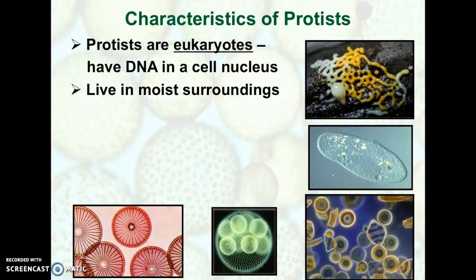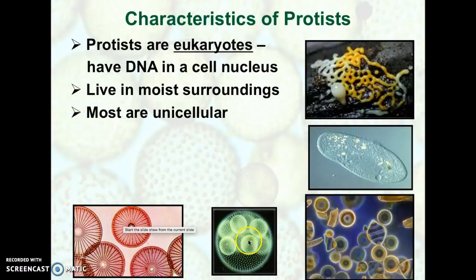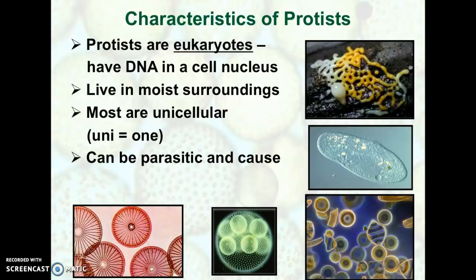Protists are going to live in moist surroundings — either in water or in damp areas. Most of them are unicellular, meaning one cell, though some are multicellular. For the most part they're microscopic and you'll need a microscope to see them. However, some plant-like protists like slime mold you can see without a microscope, but most — like red algae, volvox, paramecium, and glass-like diatoms — require a microscope.